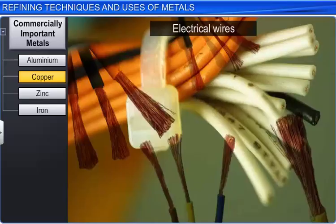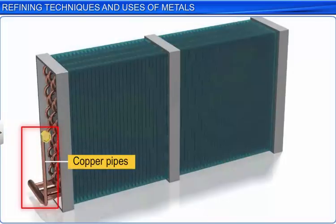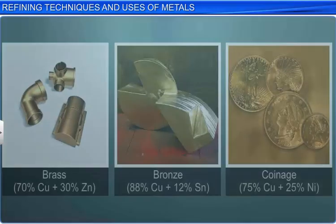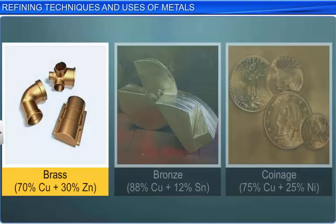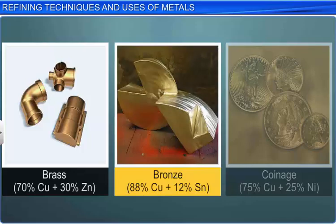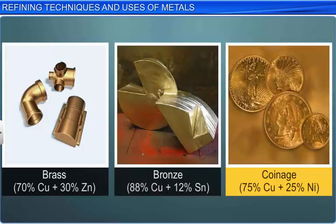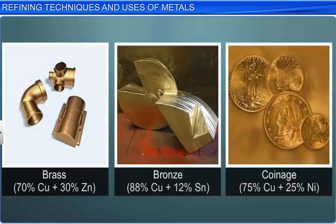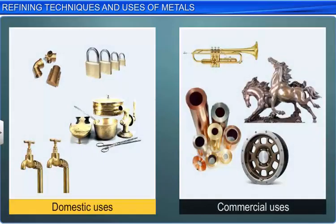Copper is used for making electrical wires. Copper pipes are used in homes and industries to carry water and steam. Copper forms alloys such as brass with zinc, bronze with tin, and coinage alloy with nickel. These alloys are harder than copper and have many domestic and commercial uses.